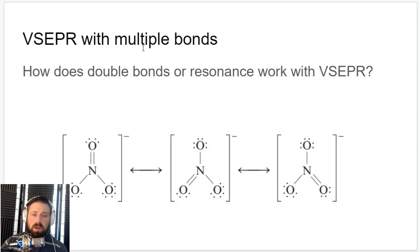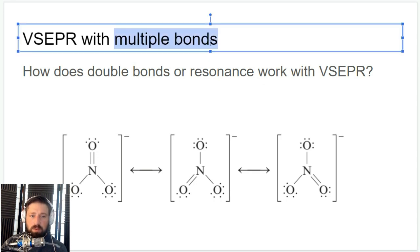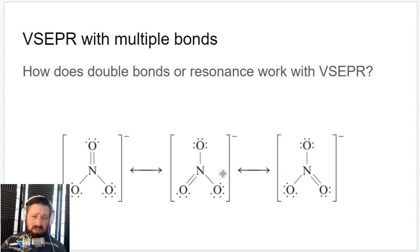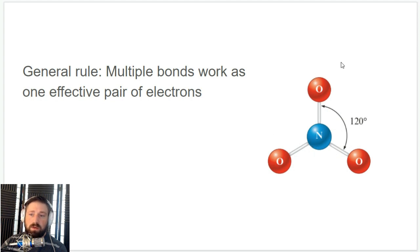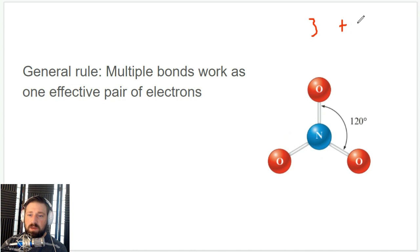Something I haven't covered yet is multiple bonds. As a general rule, multiple bonds work as one effective pair of electrons when thinking about VSEPR. For example, this nitrate molecule — even though it has a double bond, we don't worry about that double bond when counting electron groups. All of those electrons are considered one group. So for nitrate, we count one, two, three groups, which means it's going to be trigonal planar.